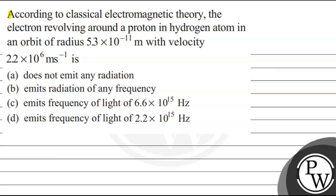Hello everyone, let's read the question. According to classical electromagnetic theory, the electron revolving around a proton in a hydrogen atom in an orbit of radius 5.2 × 10⁻¹¹ meter with velocity 2.2 × 10⁶ meter per second is: